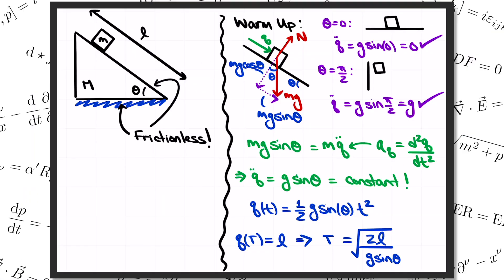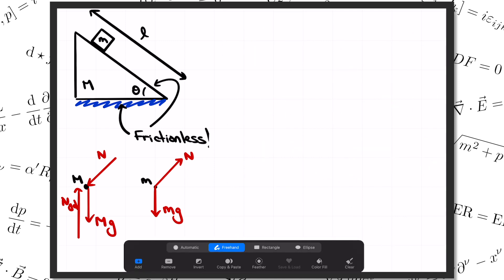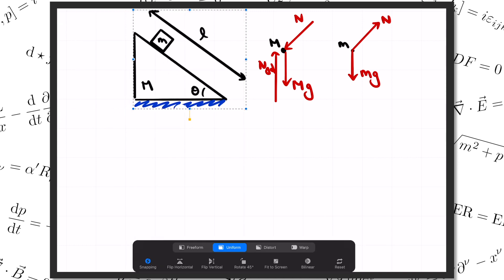We'll start again with the free body diagrams, this time for the ramp and for the block. The block has gravity mg pulling down and normal force N pointing perpendicular to the ramp surface. For the ramp itself, we again have gravity Mg pulling down, then the opposite normal force of the block pushing on the ramp, and finally another normal force from the ground pushing up on the ramp. Those are the free body diagrams for both the ramp and the block.